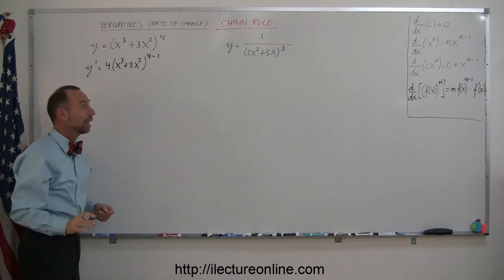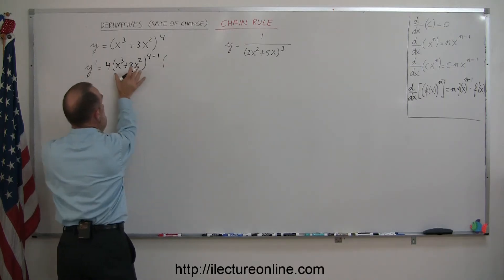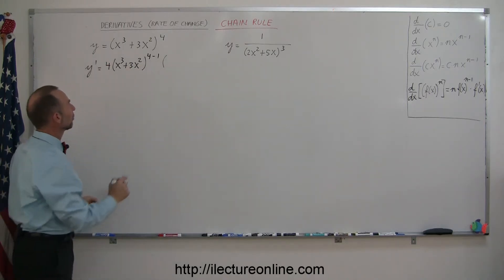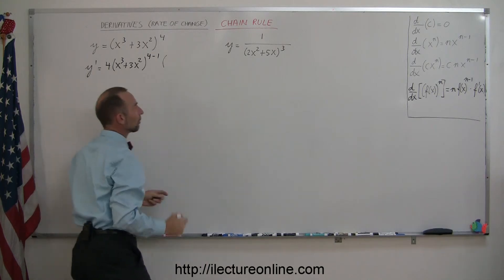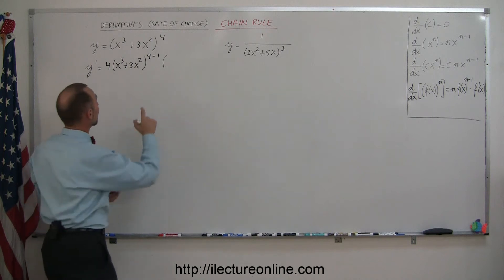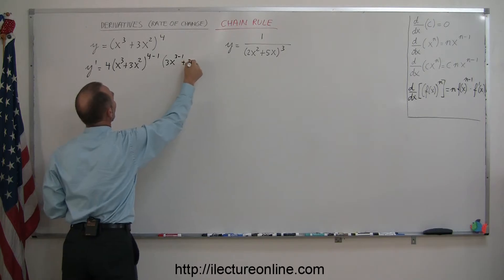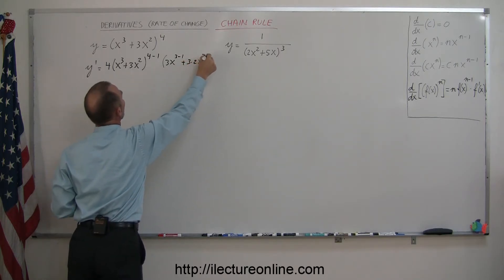So we subtract from the exponent. And then we have to multiply that times the exponent of what's inside the parentheses, the function of x inside. And so for that, we use the rules that we've learned over here. And so that means we're going to write 3x to the 3 minus 1 plus 3 times 2x to the 2 minus 1, like that.